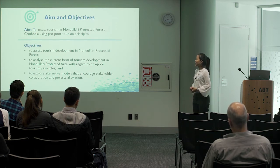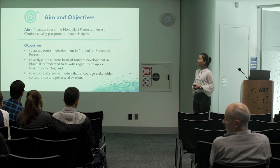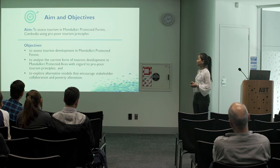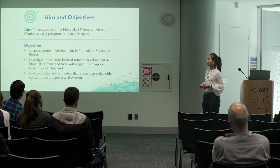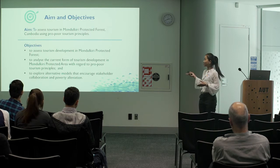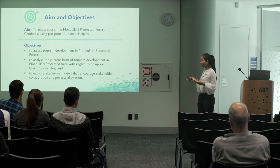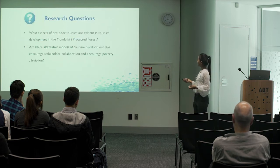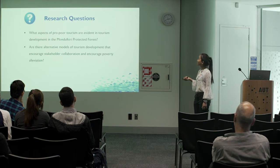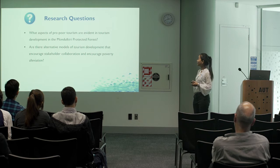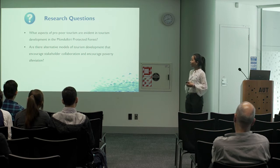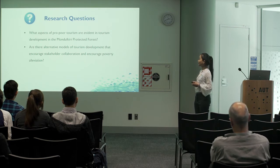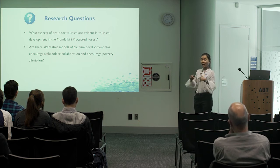This is the aim and objective of my study. The main aim is to assess tourism development in Madhukuri Protected Forest using pro-poor tourism principles. To reach this aim, I will employ three basic objectives: first, to understand tourism development in this area; second, to analyze the current form of tourism using pro-poor tourism principles; and third, to explore alternative models that encourage stakeholder collaboration and poverty reduction. My two research questions are: what aspects of pro-poor tourism are evident in tourism development in Madhukuri Protected Forest, and are there alternative models for tourism development that encourage stakeholder collaboration and poverty reduction simultaneously?